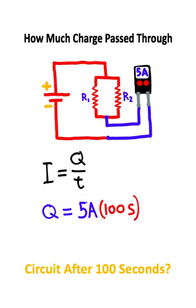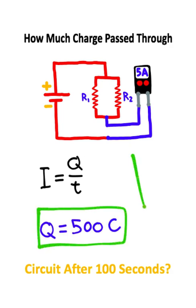So 5 amps times 100 seconds will give us a charge of 500 coulombs. So 500 coulombs is the answer to this problem.